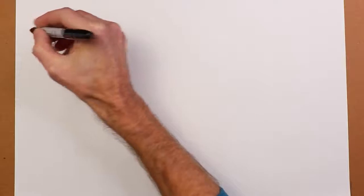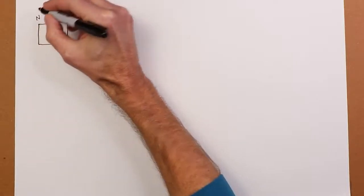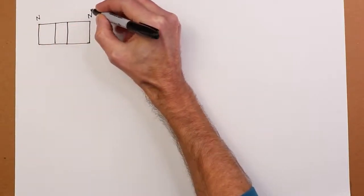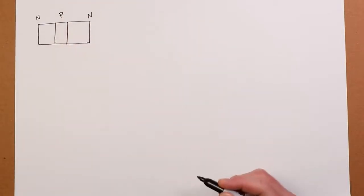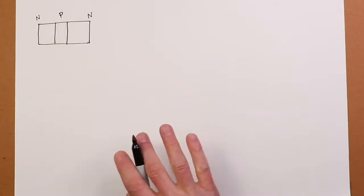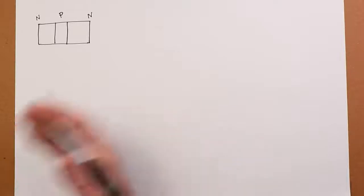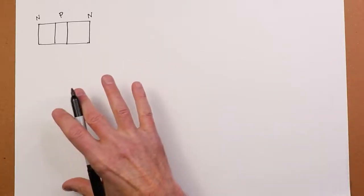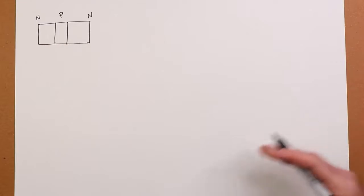So on this end, this is going to be N material. Same on this end, in the middle is P material. Now it's possible to make the inversion of this, PNP, rather than NPN. If you understand how one works, the other one is fairly easy to grab onto. So I'm just going to focus on the NPN initially.